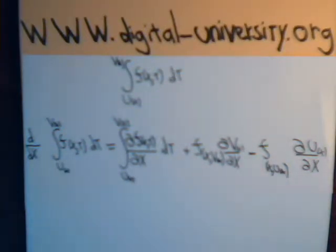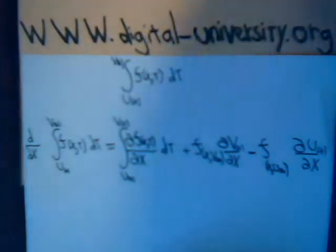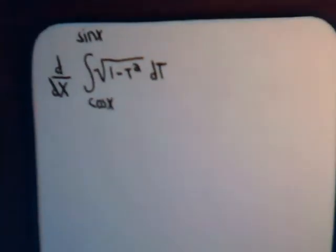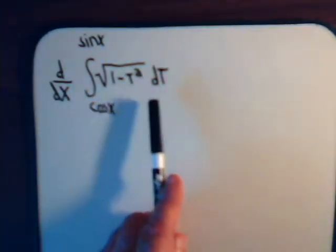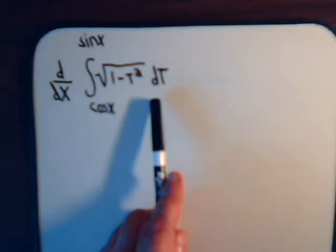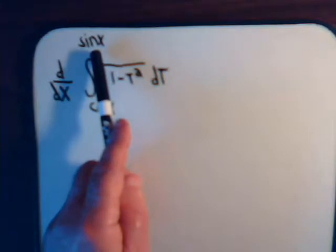So in this video, what we're going to do is apply this to a specific problem. And here we have this. With the integral of the square root of one minus t squared dt, the limits are from cosine of x to the sine of x,